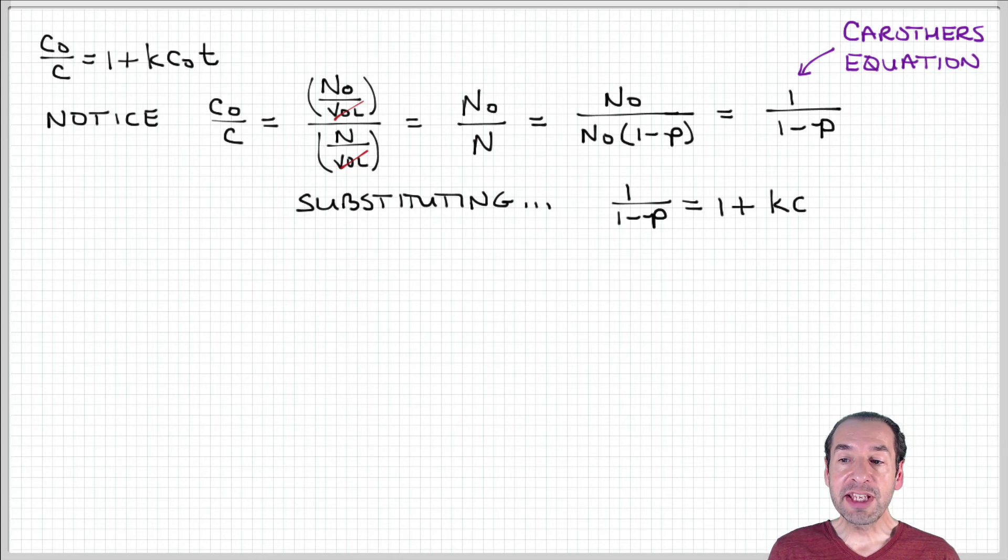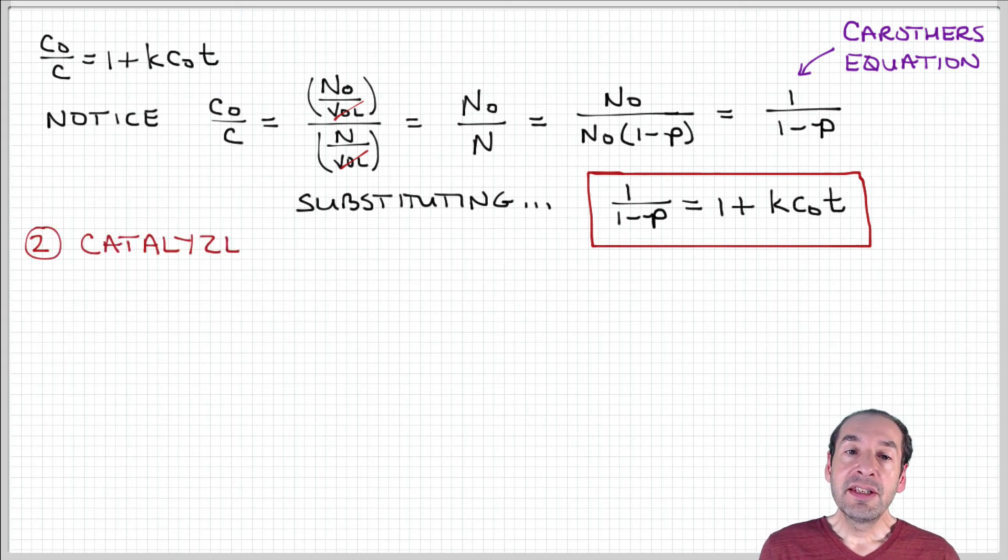If we substitute that in, we can obtain an expression for the kinetics in terms of this extent of reaction. We can find how the extent of reaction varies as a function of time and how to tune that by changing the concentration of monomer and the rate constants associated with the reaction.